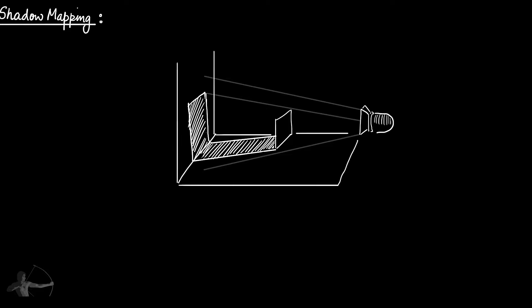In general, shadow mapping is performed in two steps. There are also a few specific steps for Unity which we will also look at in this chapter. Step one: the objective of this step is to bake a depth map of the scene from the light's eye.